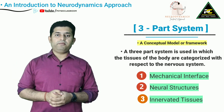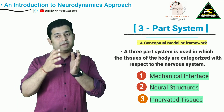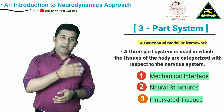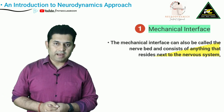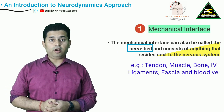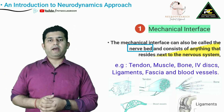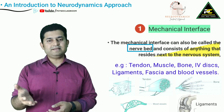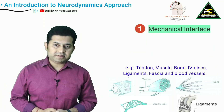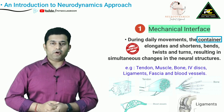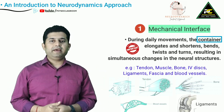By understanding this three-part system, it will become very easy to comprehend that many neural problems can in fact have their origin in the musculoskeletal system and vice versa — many musculoskeletal disorders can have their origin in the nervous system. Mechanical interface can be simply called the nerve bed. All those tissues that reside next to the nervous system are referred to as mechanical interface, such as the skin, fascia, muscles, tendons, bones, ligaments, blood vessels, intervertebral discs, etc. Tissues that form the mechanical interface can also be considered as the container for the nervous system, and therefore any movement of the mechanical interface is also going to produce movements in the nervous system.